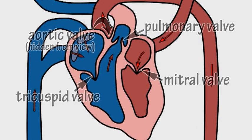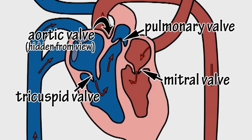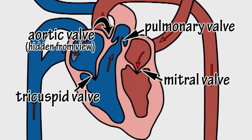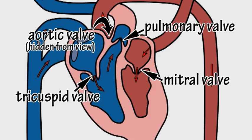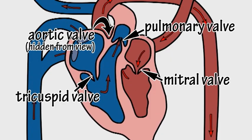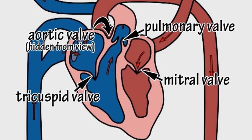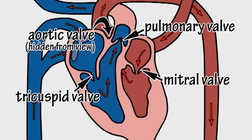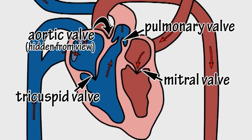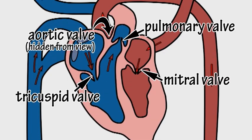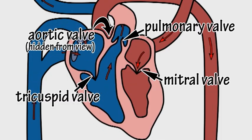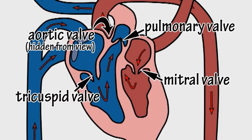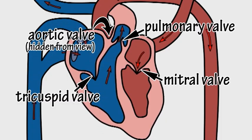The heart has valves which can close to prevent blood from flowing backwards as the walls of the heart contract and relax, and this is what gives rise to the distinctive lub-dub sound of the beating heart.